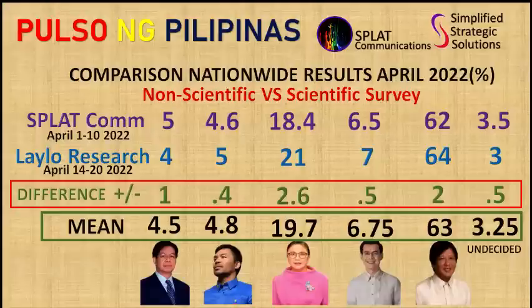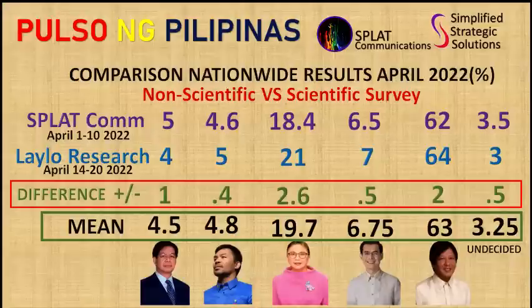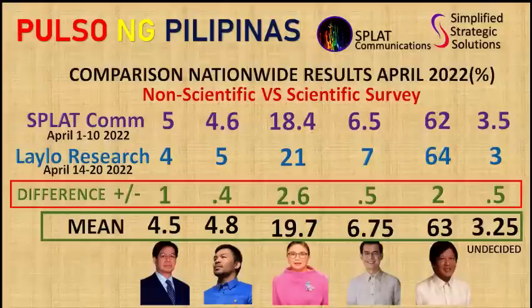This row represents the difference between the results of the two studies. The differences in the presidential polls from left to right are: Senator Ping Laxon 1%, Senator Manny Pacquiao 0.4%, VP Lenny Robredo 2.6%, Manila Mayor Isco Domagoso 0.5%, former Senator Ferdinand Marcos Jr. 2%, and Undecided 0.5%. Both the LELO survey and COLLIA survey summaries yielded very similar results, showing no significant statistical difference.